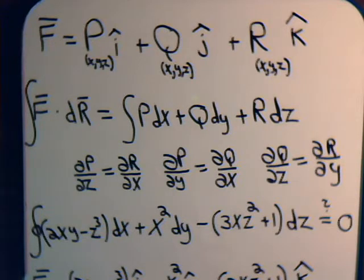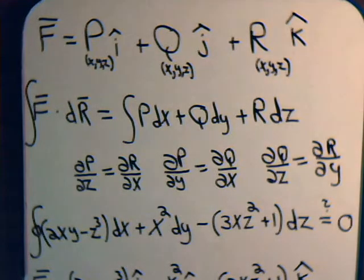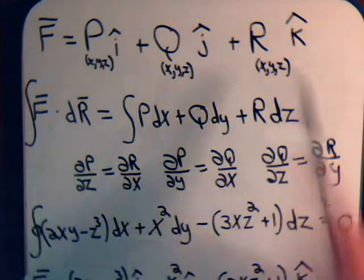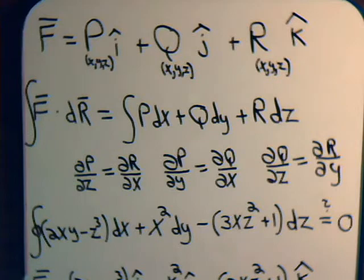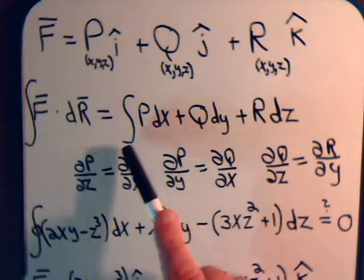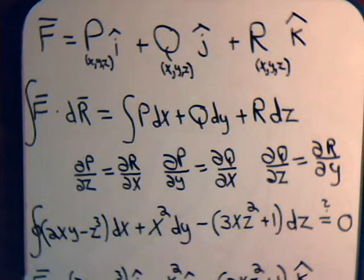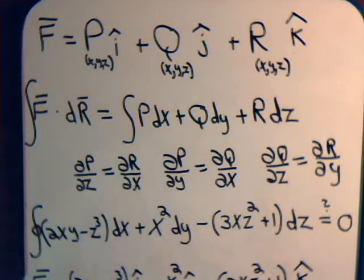Let's continue our discussion working now with three-dimensional vectors and exact differentials. We have some vector F with i, j, and k components, and each one of these components — P, Q, R — can be functions of x, y, and z. If we take the dot product of our vector with the displacement position vector in three dimensions, that gives us the general form of a line integral in three dimensions along the space curve. What we showed in the previous video is that if these three equations hold true, then this is an exact differential.